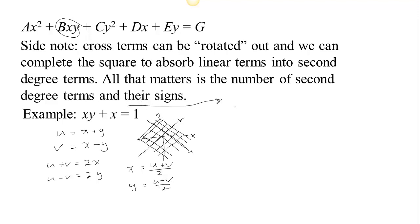So now we have x equals u plus v over 2 and y equals u minus v over 2. If I substitute those into this original equation, xy becomes u plus v over 2 times u minus v over 2 plus x is u plus v over 2, and then we have equal to 1 there. So in this new rotated coordinate system, if I multiply this out, that's a difference of squares. u squared minus v squared over 4 plus u plus v over 2 equals 1.